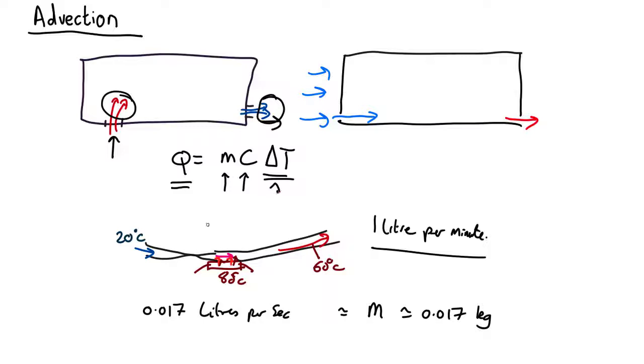Delta T is the difference between the temperature in 20 and going out 60, so that's going to be 40 centigrade. Specific heat capacity of water is a whopping 4200 joules per kilogram per kelvin.